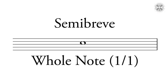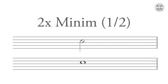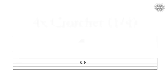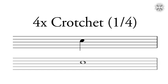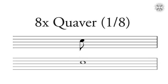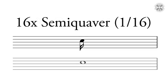The semibreve can of course be subdivided, and these subdivisions have different names. In British nomenclature we speak of minims, crotchets, quavers, etc. There are two minims per semibreve — this is also known as the half note in American parlance. This is then subdivided into two crotchets. Crotchets are quarter notes in the US, and there are four quarter notes in a whole note. Crotchets are then further divided into quavers, eighth notes, and on into semiquavers, sixteenth notes, and so on.